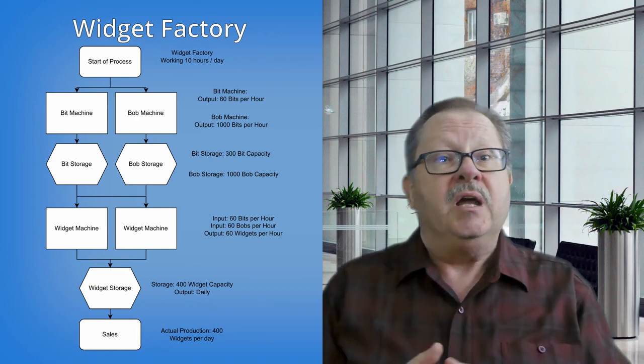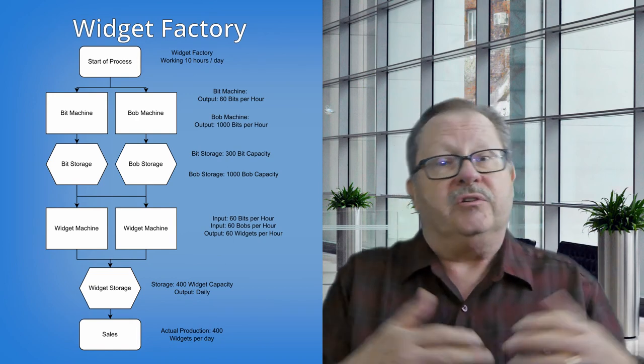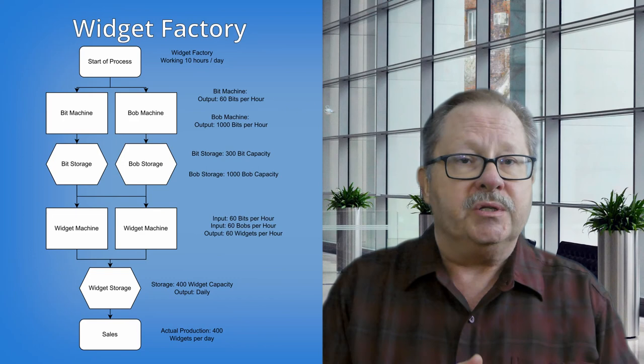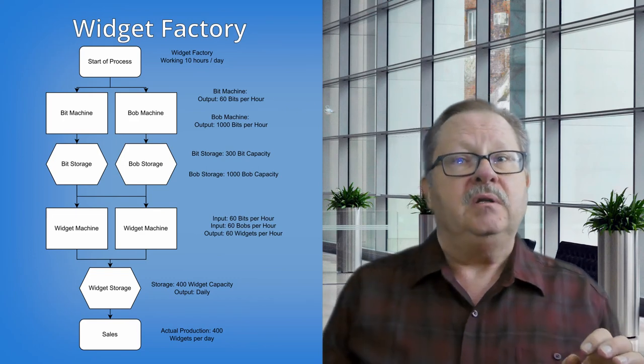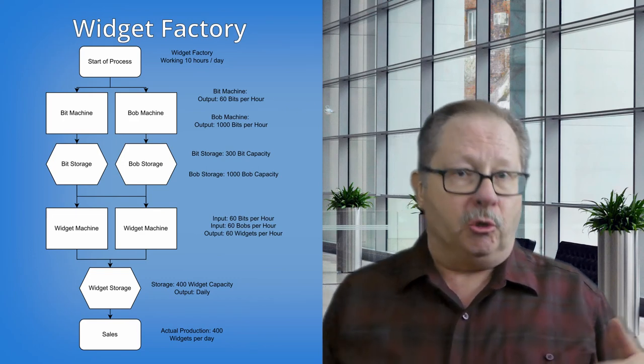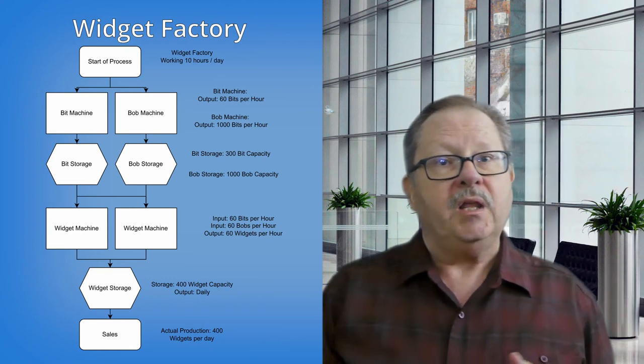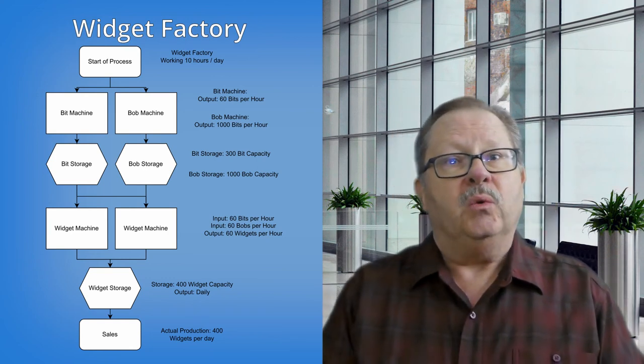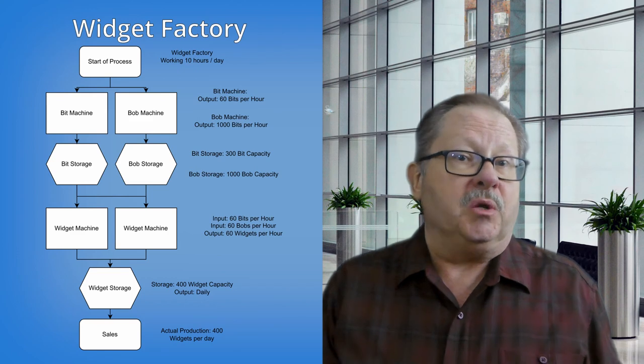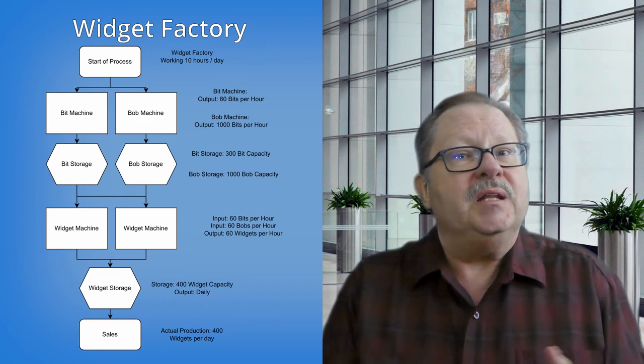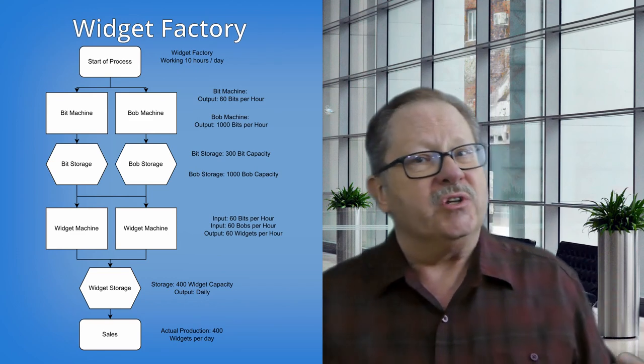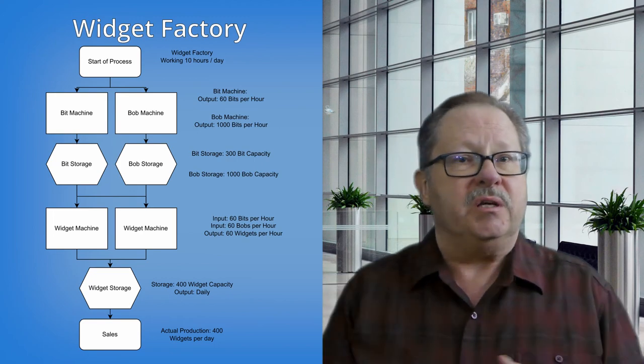Then a misguided employee could see that there's extra space there and could commandeer that space for storage of other items. Instead, we stop and re-evaluate. Go back to step one and find our new constraint. While the bits and widgets production is well balanced, we may be limited by widget storage and need to resolve that before increasing production.